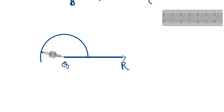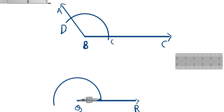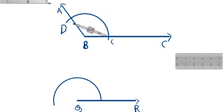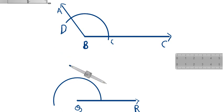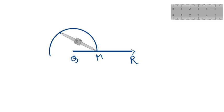Now we come back to the angle drawn above. We take the compass and place it at point C, then extend it to point D to measure that distance. Coming back down, we keep the compass at point M — where the arc intersects — and the radius is not changed.